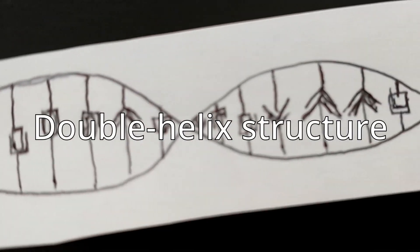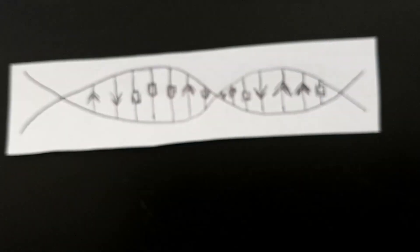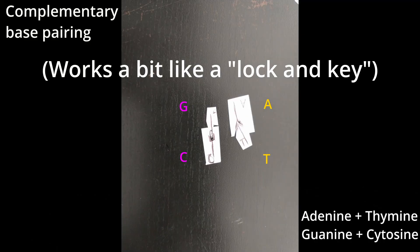It has something called a double helix structure, which just means it's made of two spirals going in opposite ways. The strands are held together with DNA bases which pair up in a specific way, and to replicate, it first needs to unzip.